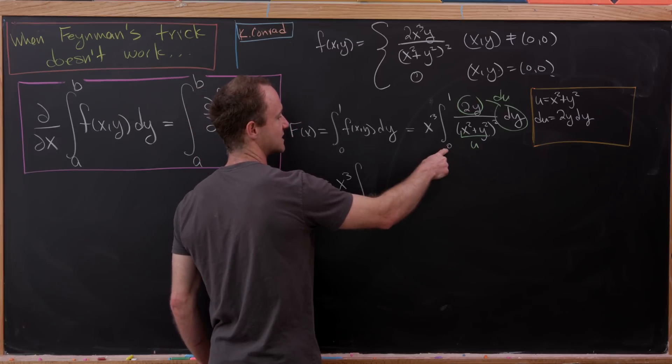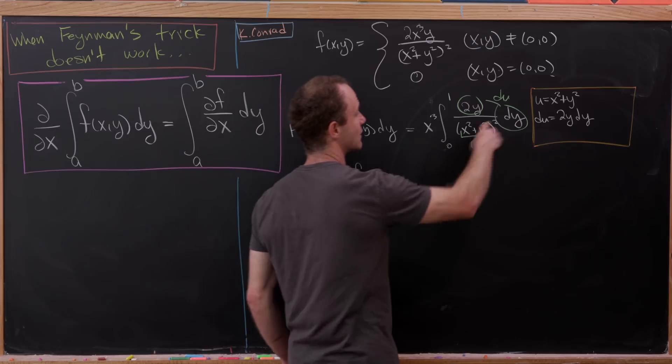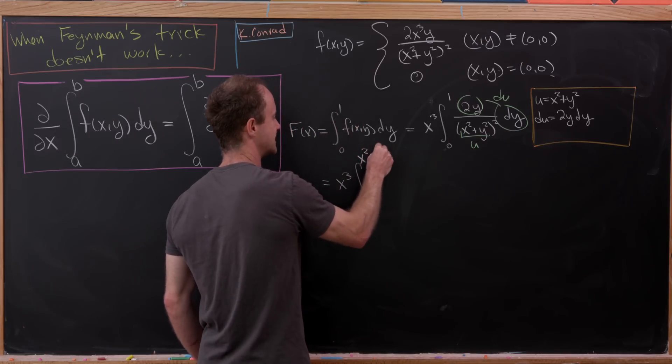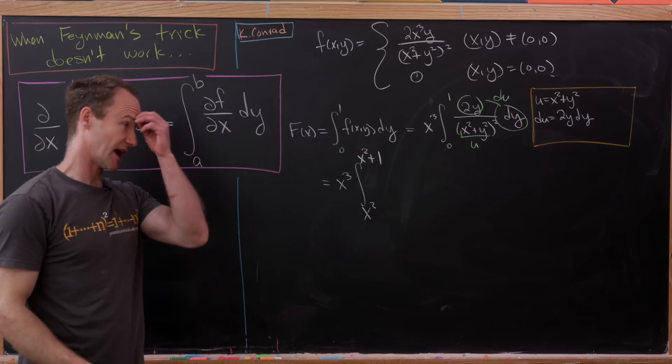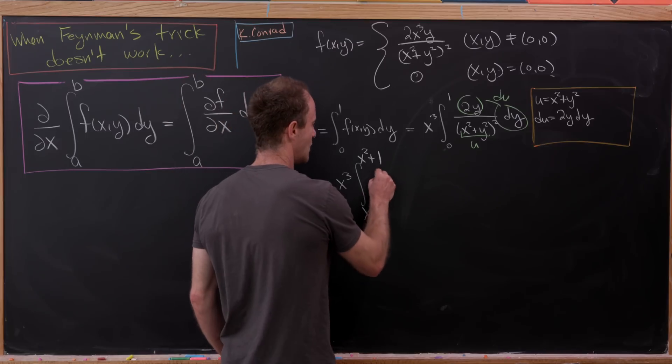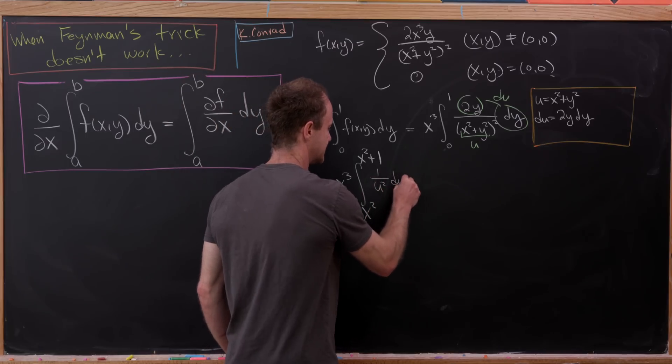That's going to give us x cubed times the integral from something to something. When y is equal to zero, u is equal to x squared. Likewise, when y is equal to 1, u is equal to x squared plus 1. So that gives us our new upper and lower bounds, and then we have 1 over u squared du.